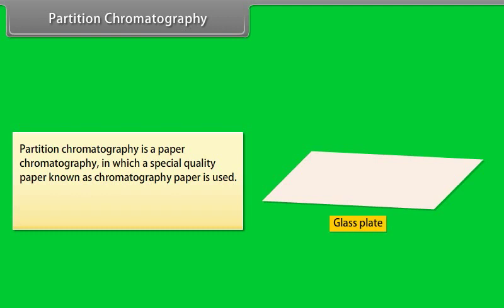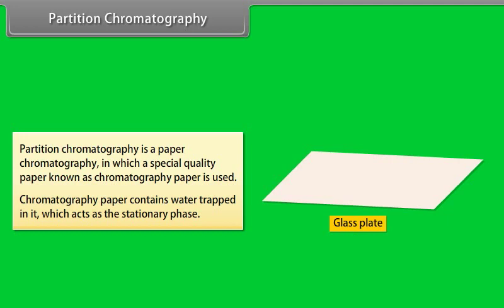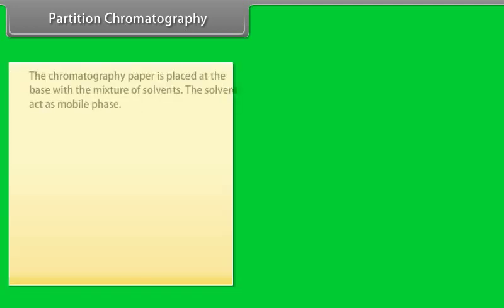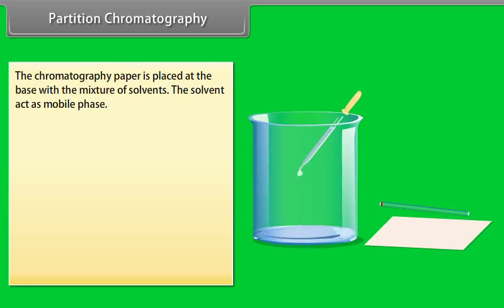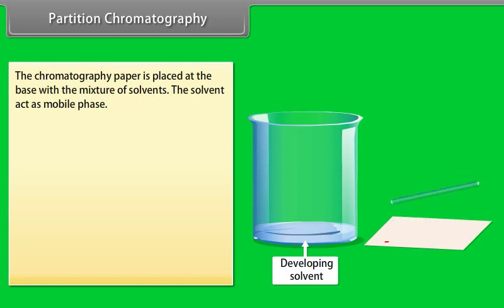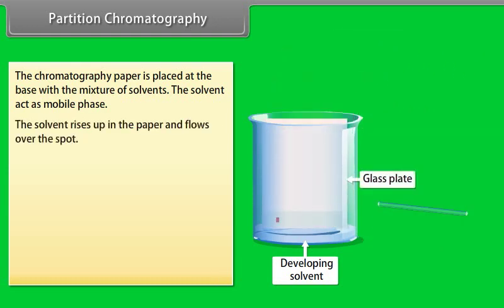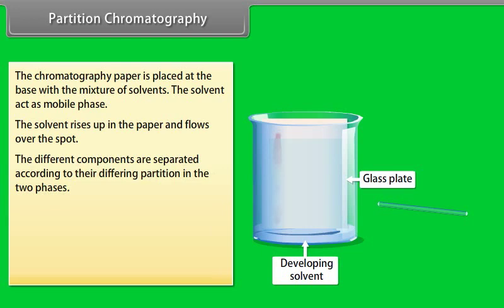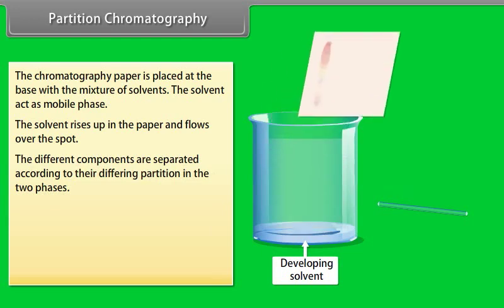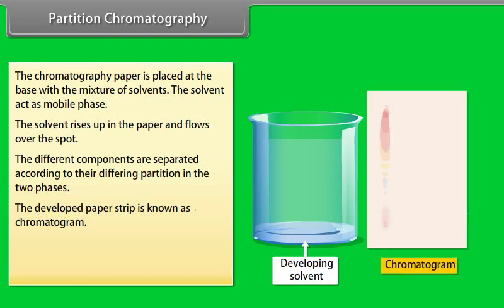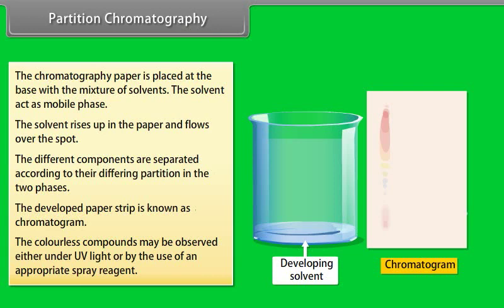Partition chromatography: Quality paper known as chromatography paper is used. The chromatography paper contains water trapped in it, which acts as the stationary phase. The paper is placed at the base with the mixture of solvents, which acts as the mobile phase. The solvent rises up in the paper and flows over the spot. The different components are separated according to their differing partition in the two phases. The developed paper strip is known as a chromatogram. Colorless compounds may be observed under UV light or by use of an appropriate spray reagent.